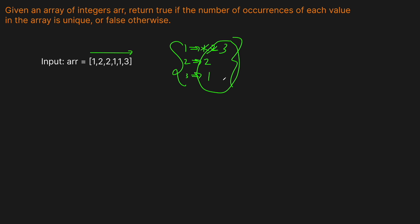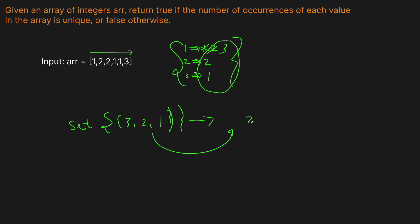But how do we actually figure out whether these frequencies are unique? We're going to use the set data structure. A set will get rid of any duplicates. So if we put in these values — 3, 2, 1 — and get back the same number of elements, that means they were all unique. If the set removes non-unique elements, and we put 3 numbers in and get 3 back, they're all unique. That's how we figure out whether our values are unique — we put them into a set and check if the count equals the number of values we had.